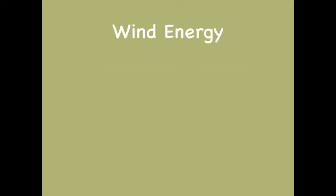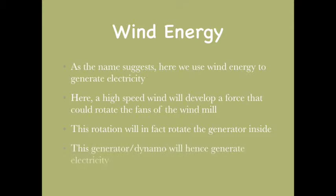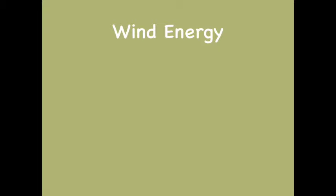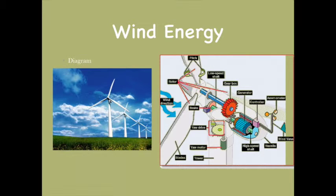Now let's study about Wind Energy. As the name suggests, it uses wind to generate electricity. A very high speed wind develops a force that can rotate the fans of the windmill. This rotation is linked with a dynamo, which in turn generates electricity. Given below is a diagram of a windmill — this image shows the internal part of the windmill, where the gears rotate each other to generate electricity.